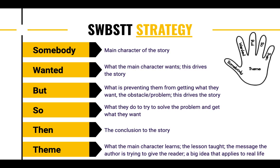Now, make sure you have all those written down. Let me talk about the little hand really quick. I have the hand and one part of the strategy on each finger, and then theme is in the palm of your hand — that's what helps me remember. Somebody on the thumb, wanted, but, so, then — when you close them all together, when they all come together, they form the theme. You have to use the entire story to get the theme of the text, to decide what was the lesson that was taught. That's why I like putting theme right at the palm. There's one finger for each part of the story, and the theme is just the main meat of it.